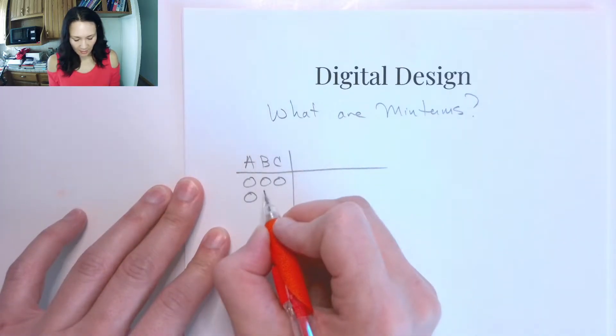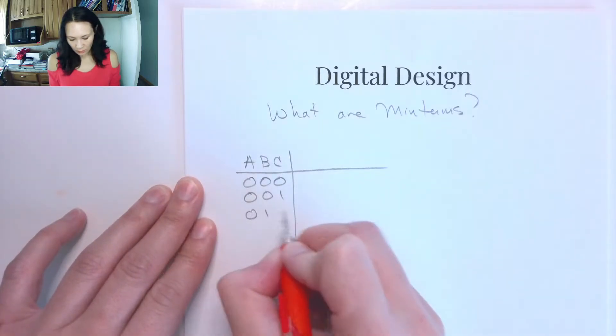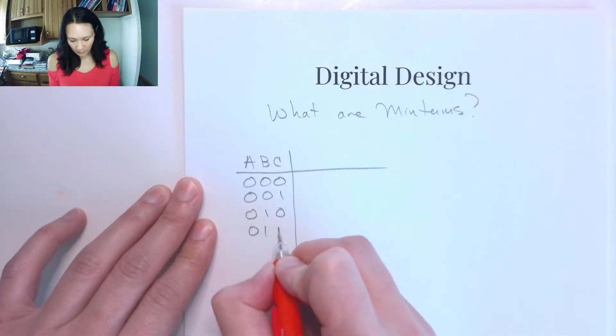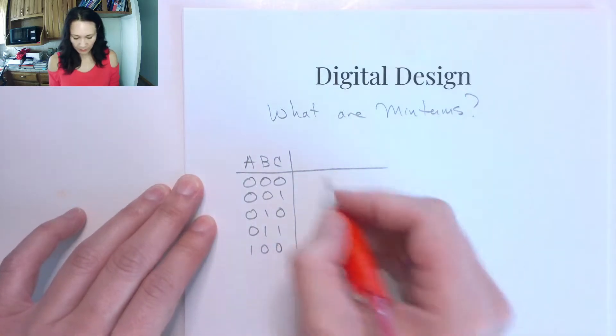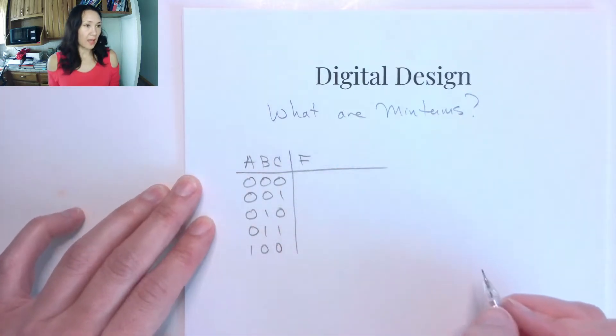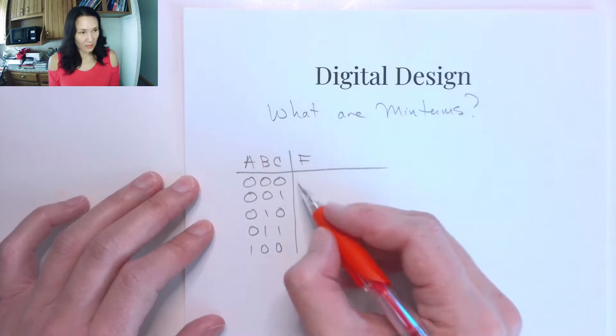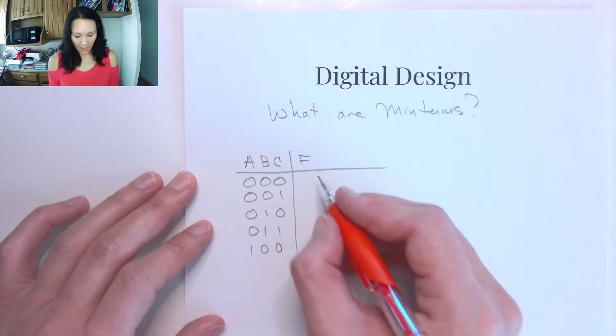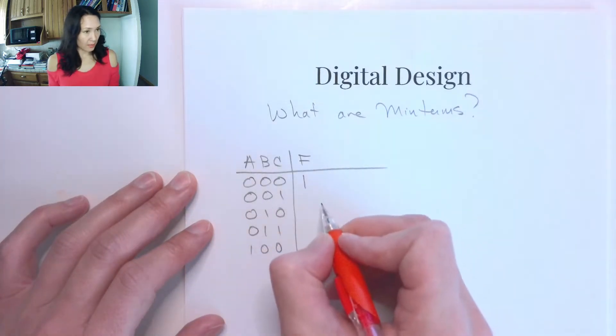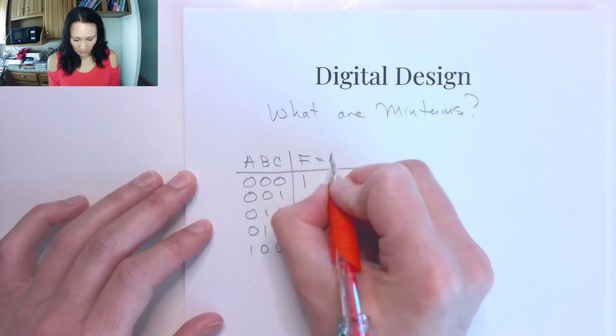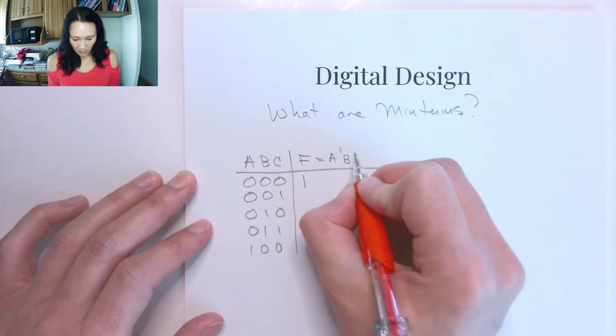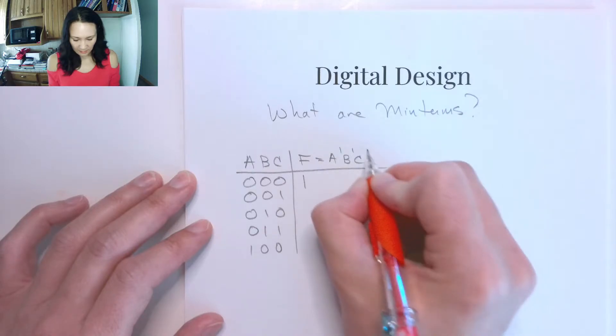So suppose I have three inputs A, B, and C. And let me just do the first few entries of my truth table. If my input is F, what conditions do I need in order for F to be true in this case?